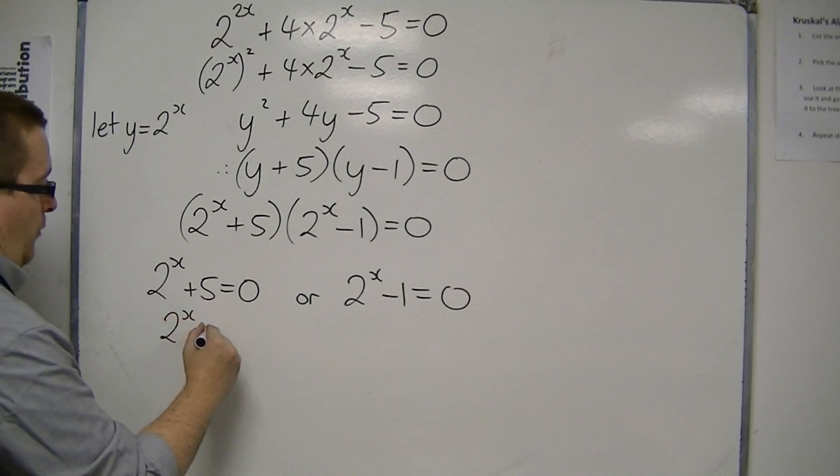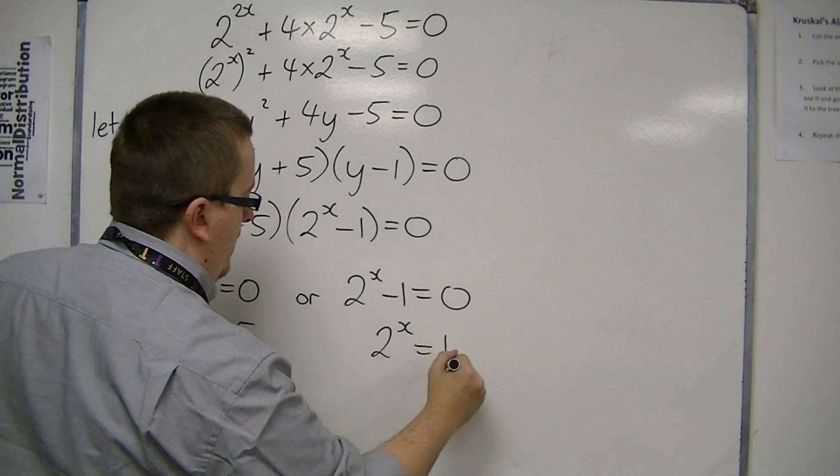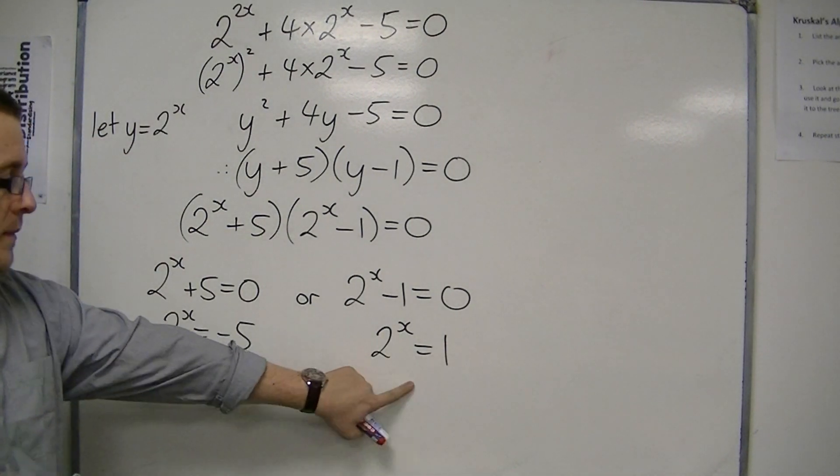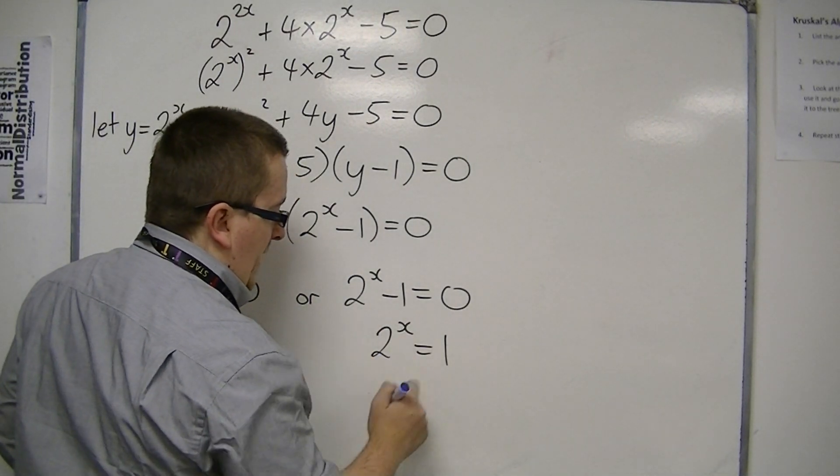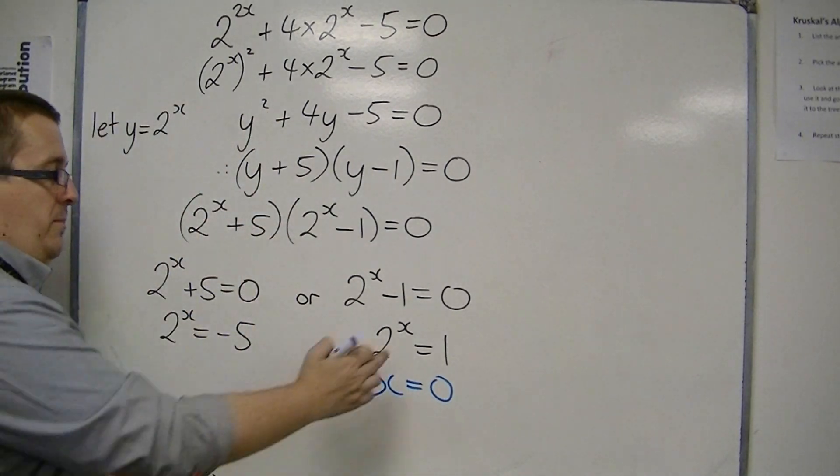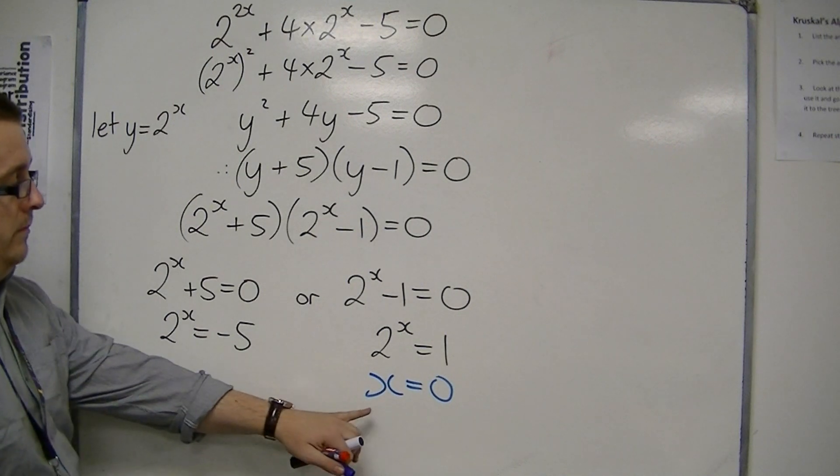So that would mean that either 2 to the x plus 5 is 0, or 2 to the x minus 1 is 0. So 2 to the x equals minus 5, or 2 to the x equals 1. Well, 2 to the x equals 1, if we start with this one, that's quite straightforward, because that would mean that x equals 0, because we know that all numbers to the power of 0 is 1.